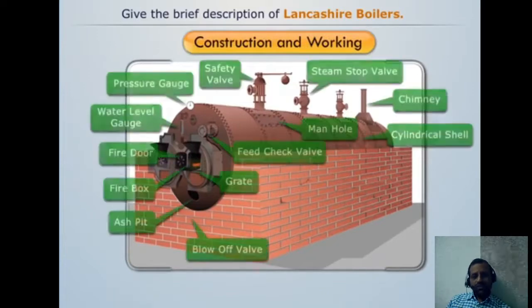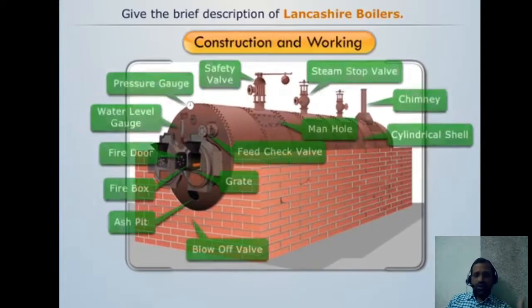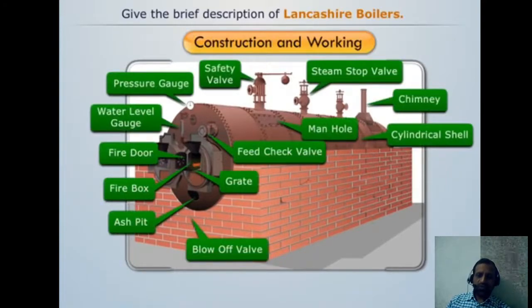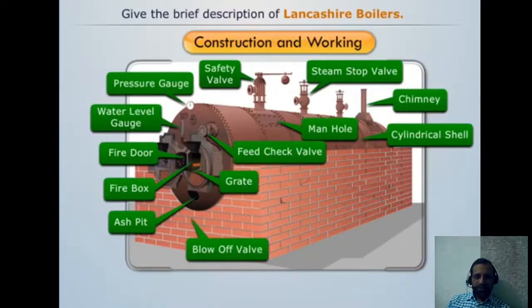Now we will see the construction and working, along with the different parts shown in 3D — the same parts shown earlier in the 2D drawing. Parts include: safety valve, steam stop valve, chimney, cylindrical shell, manhole, feed check valve, grate, fire box, fire door, ash pit, blow-off valve, water level gauge, and pressure gauge.